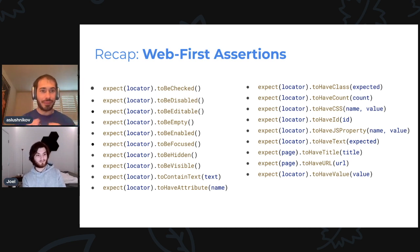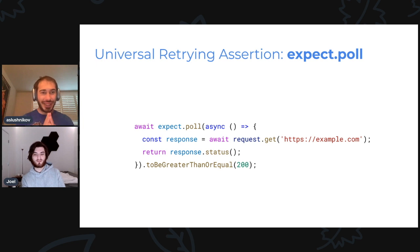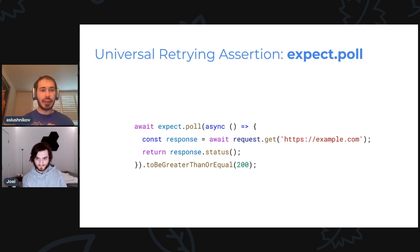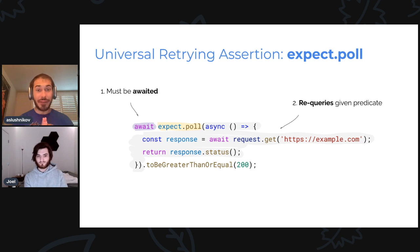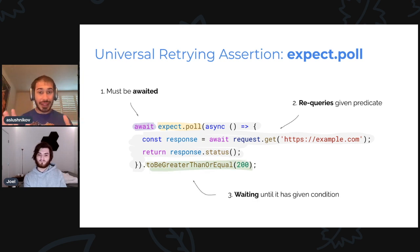But sometimes web-first assertions are not enough — for example, when you want to wait for something which is not a locator. For these use cases, in this release we introduce a new universal retrying assertion called expect.poll. Here's a small example. First, it's an async assertion, so you have to await it. You use the new expect.poll function instead of expect. As a first argument, you pass a predicate — it can be an asynchronous function. This retrying assertion will poll that function until it satisfies the condition. In this particular case, the predicate will just fetch some URL and return the status of the response.